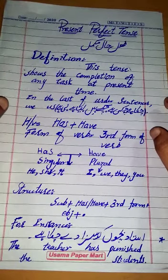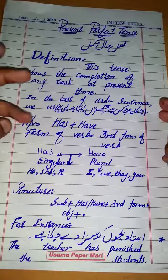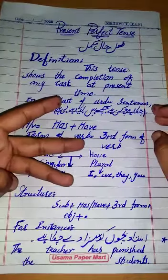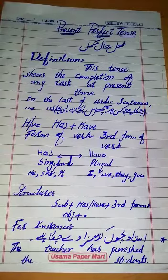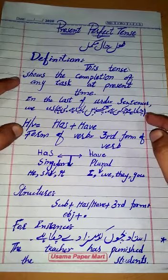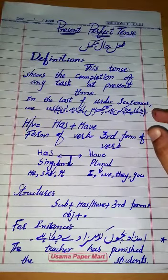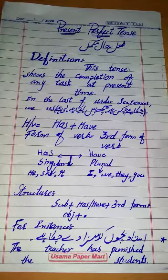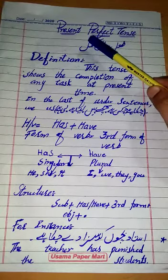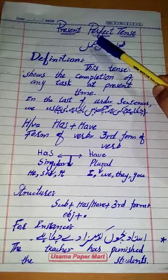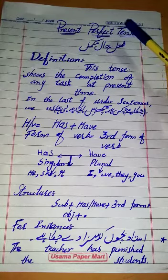The third branch of present tense. I want to remind you that there are three tenses, and each tense has four types. We are doing the present tense. The third branch is present perfect tense, and the fourth branch is present perfect continuous tense.